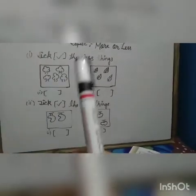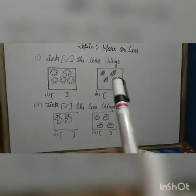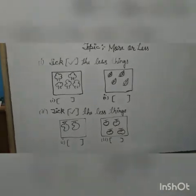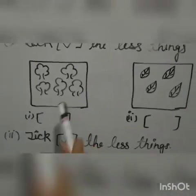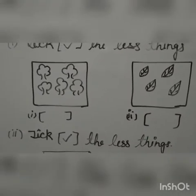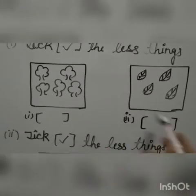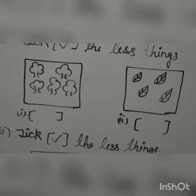First question is, tick the less things. In which box there are less things? Which trees are less or leaves are less? Which box has less things? Yes.